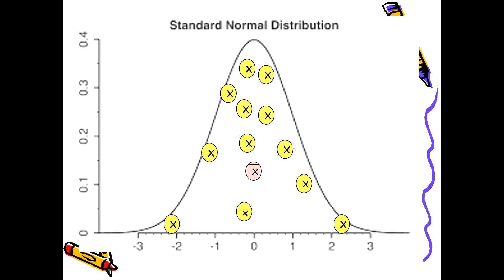X-bar represents the mean of the data. The normal distribution curve deals with quantitative data, for which we calculate the mean, median, and mode as measures of central tendency, and the measures of dispersion include the range, mean deviation, variance, and standard deviation.